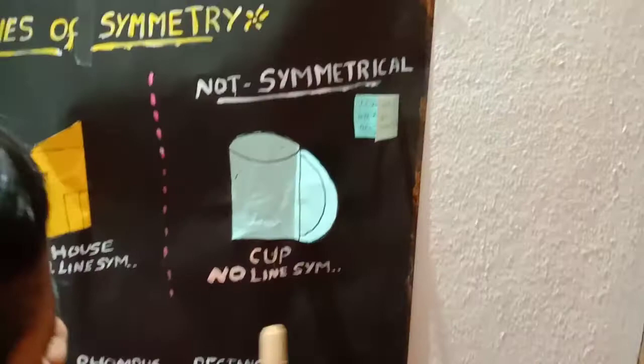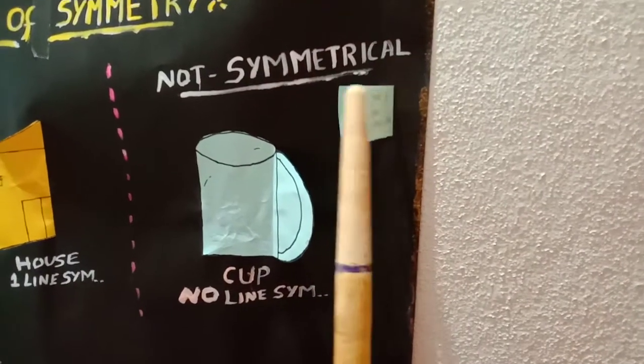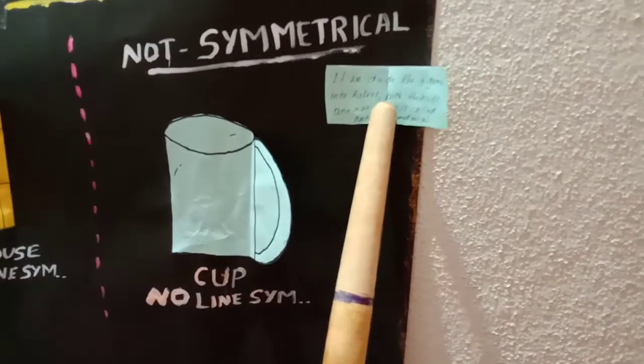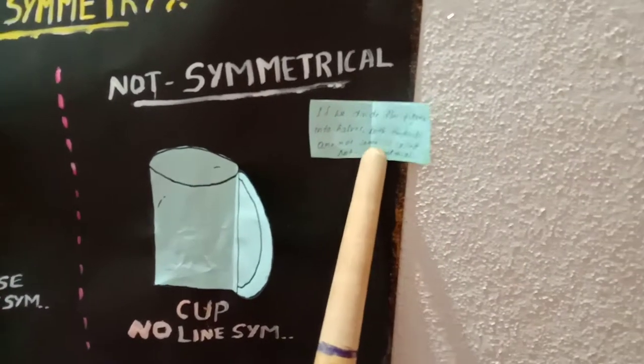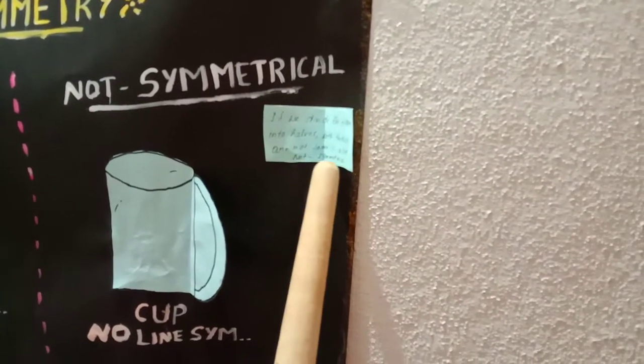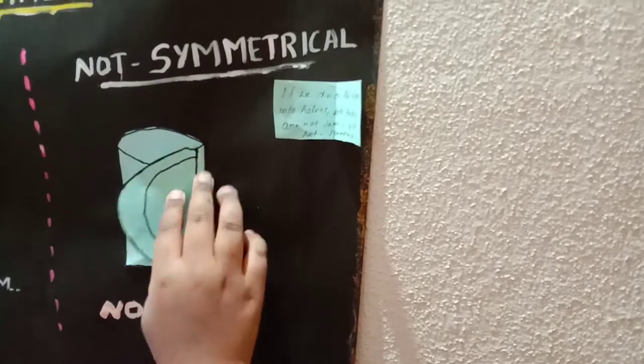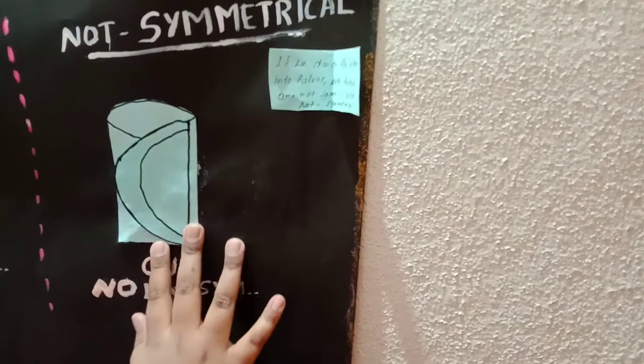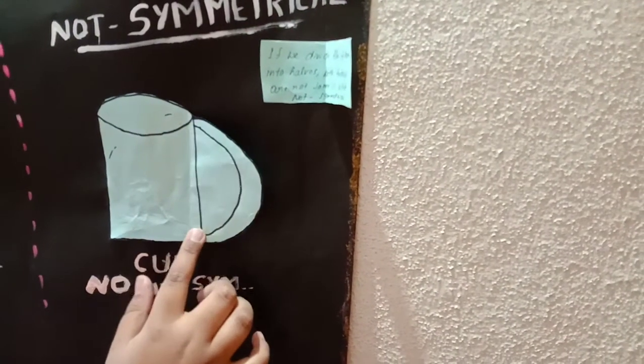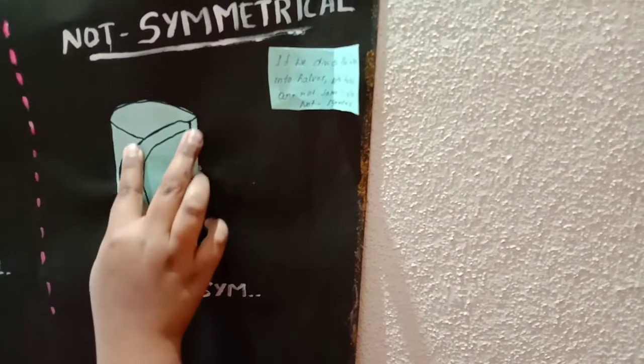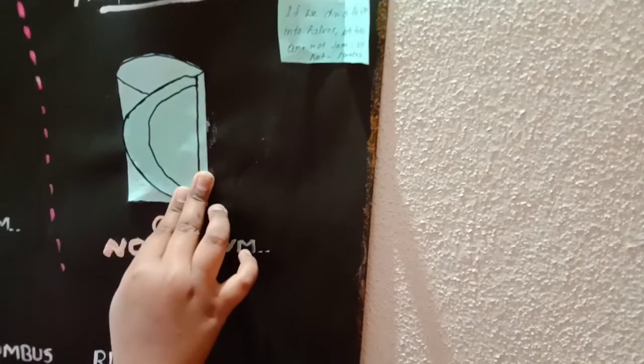Not symmetrical. What is not symmetrical? If we divide the figure into halves, both the halves are not the same, it is called not symmetrical. I fold the cup into one fold. So, it is not symmetrical because it is not overlapping each other.